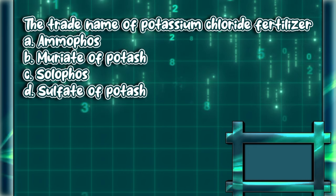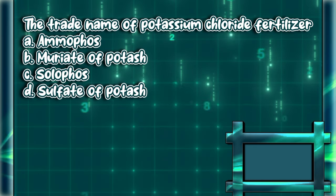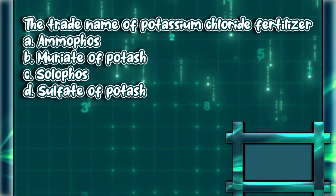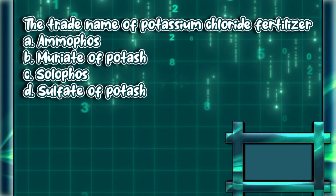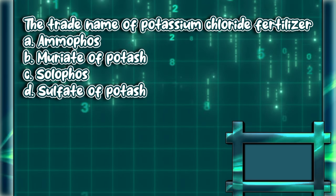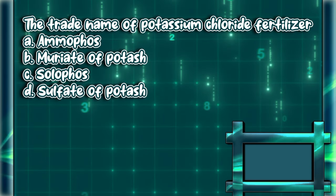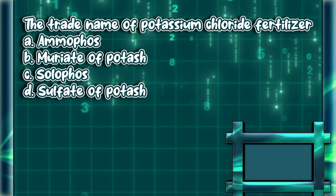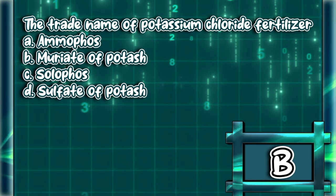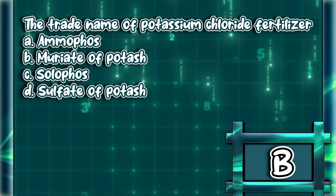The trade name of potassium chloride fertilizer. A. Amaphose. B. Muriate of potash. C. Soliphose. D. Sulfate of potash. The answer is letter B.